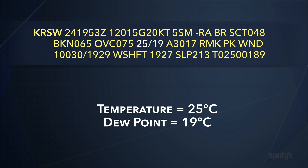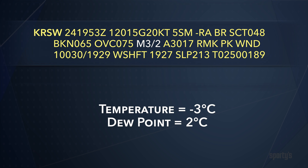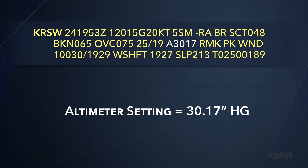Temperature and dew point are next and are given in degrees Celsius. In this example, the temperature is 25 and the dew point is 19. If the temperature had been negative, it would have been preceded by the letter M for minus. Altimeter settings are preceded by the letter A and are given in inches of mercury — the altimeter setting is 30.17 inches of mercury.